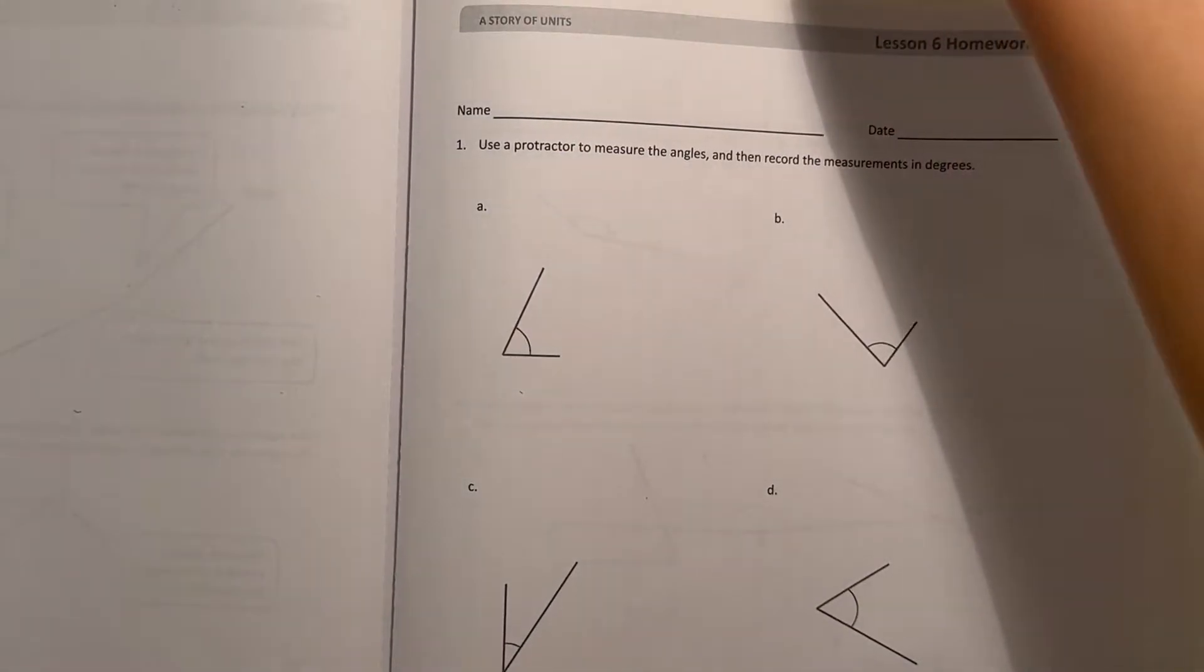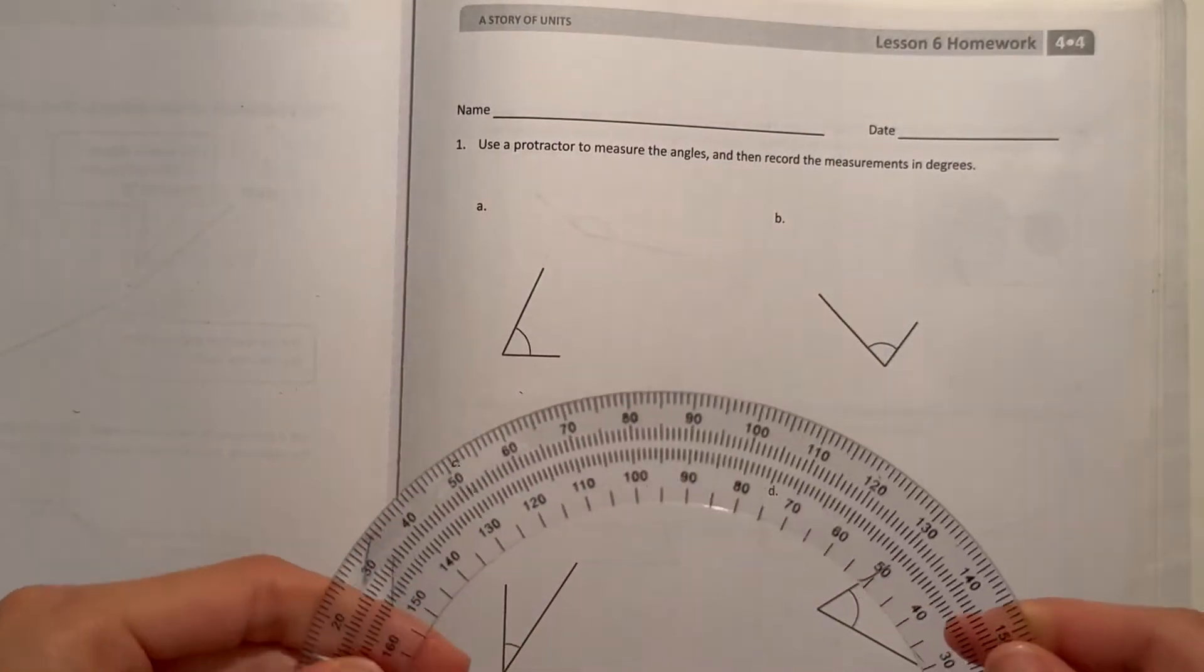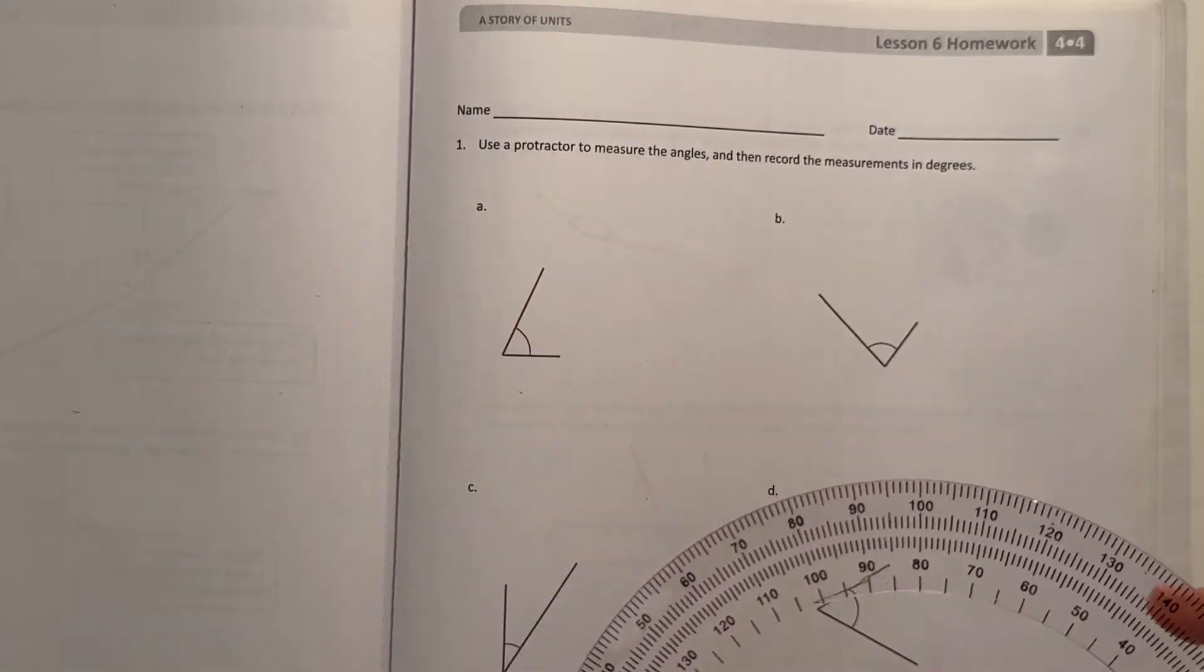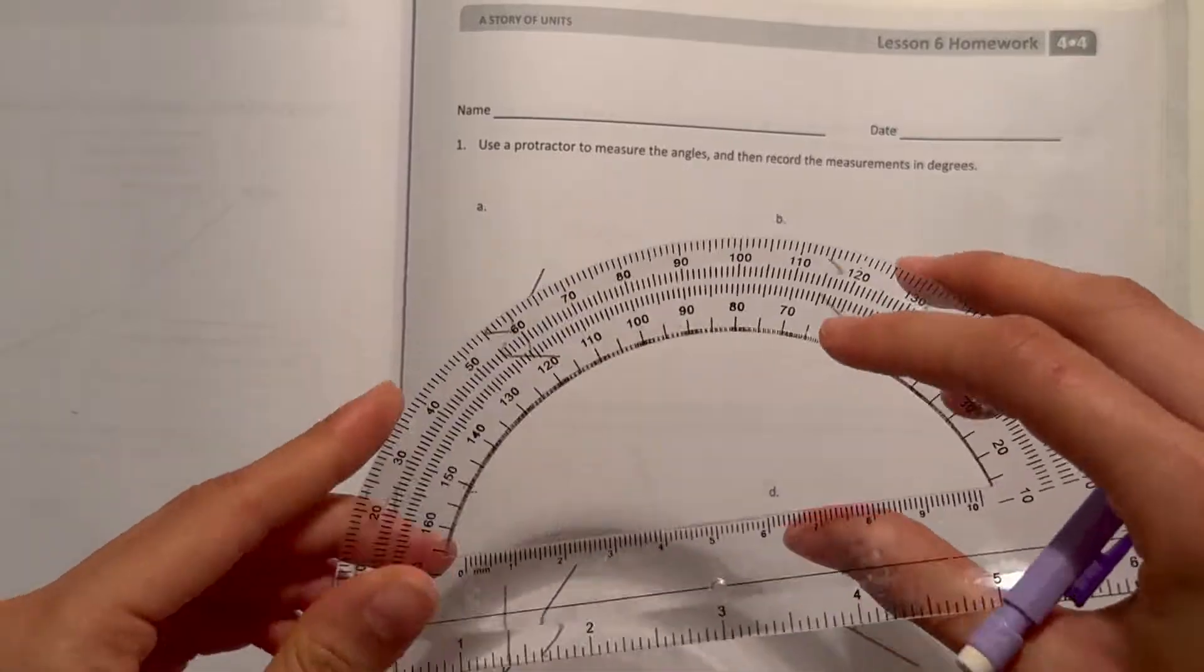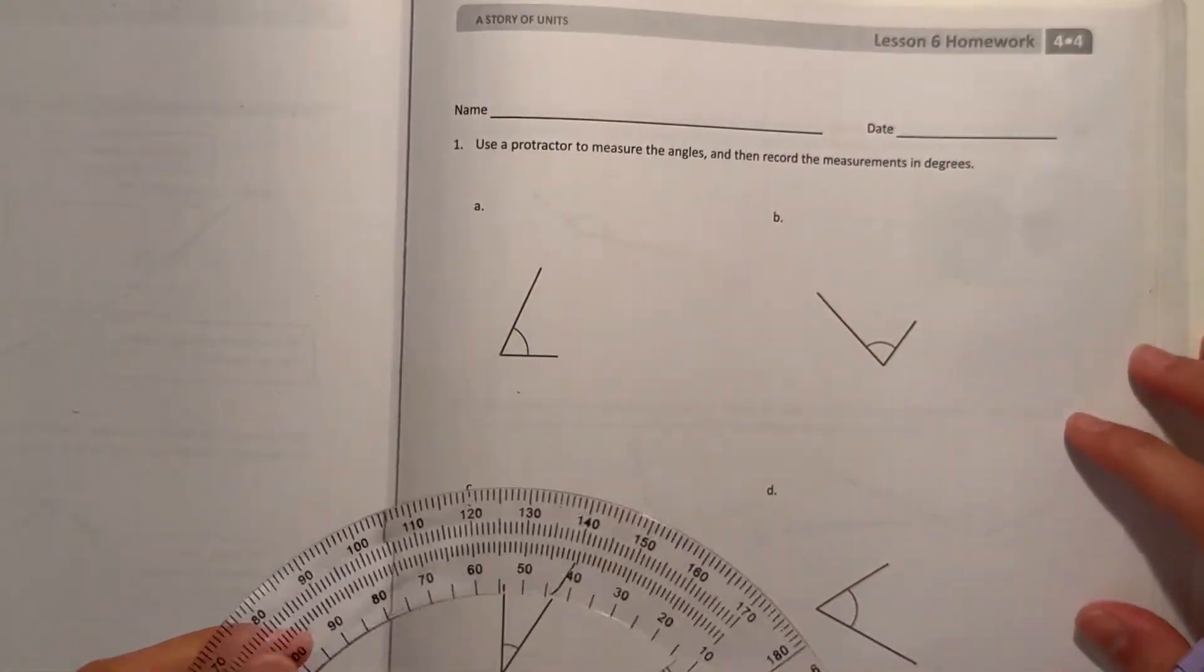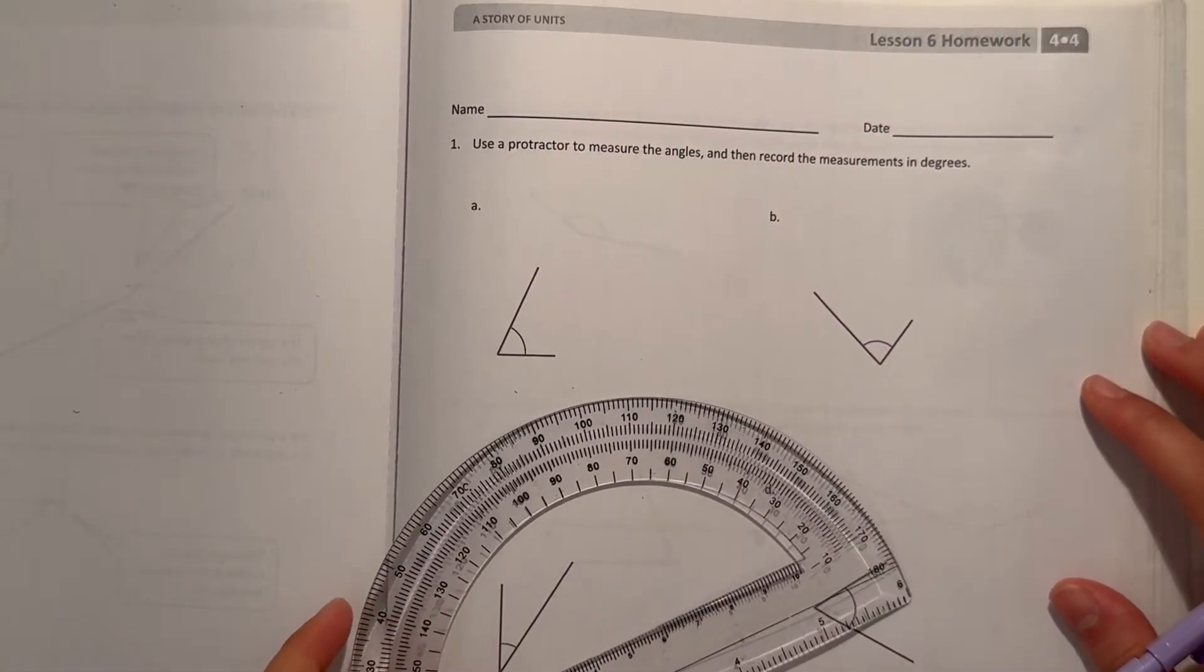Number one, use a protractor to measure the angles and then record the measurements in degrees. Alright, so here I have my protractor. You guys can get out yours too. So let's start measuring.